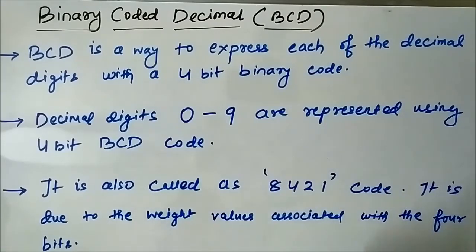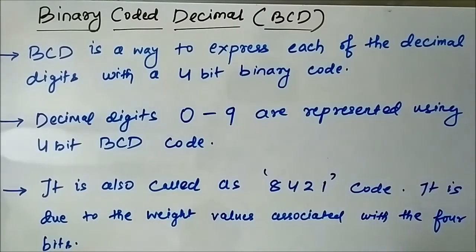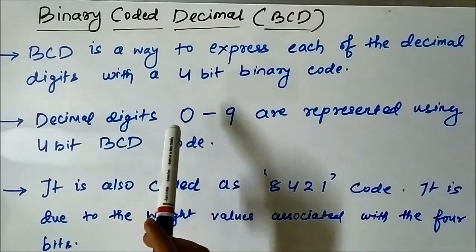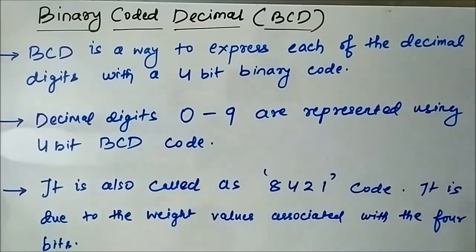The binary coded decimal technique is used to express each of the decimal digits. The decimal digits are from 0 to 9 — starting from 0 to 9, each of these decimal digits or decimal symbols, the 10 symbols, they are represented using a 4-bit binary code.